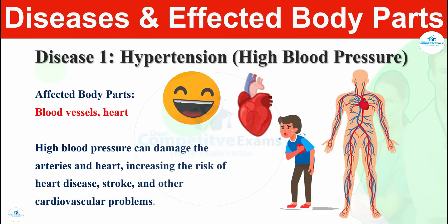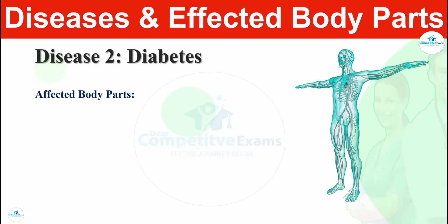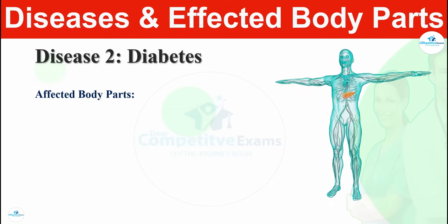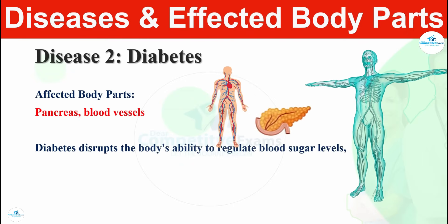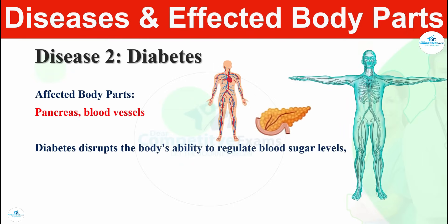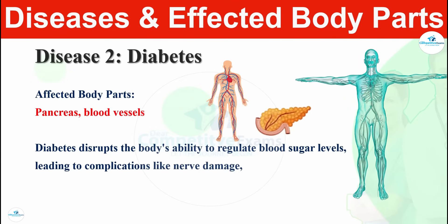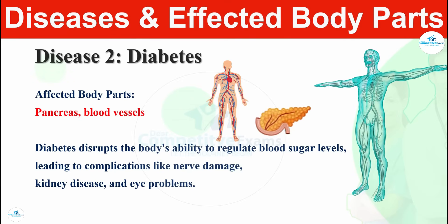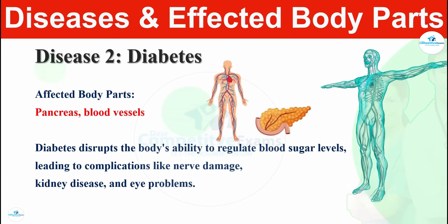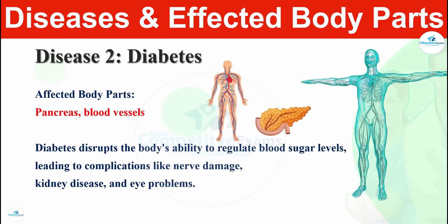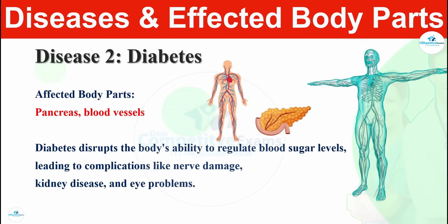Let's move on to the second disease, which is diabetes. Diabetes affects the pancreas and blood vessels. Diabetes disrupts the body's ability to regulate blood sugar levels, leading to complications like nerve damage, kidney disease, and eye problems. Diabetes affects both the pancreas and blood vessels.